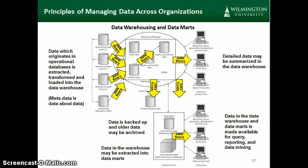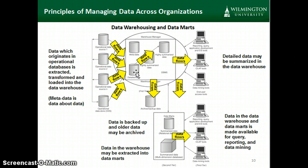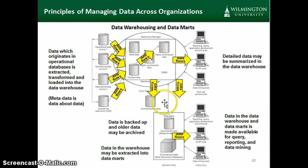This diagram shows the relationship between transactional databases and data warehouses. On the left are the transactional databases — perhaps four different systems — and we consolidate data from those individual databases into the data warehouse. Within the data warehouse, we might have multiple databases at different levels of consolidated or summarized detail. We might also extract a subset to create a data mart, or archive historical data that's not frequently used.